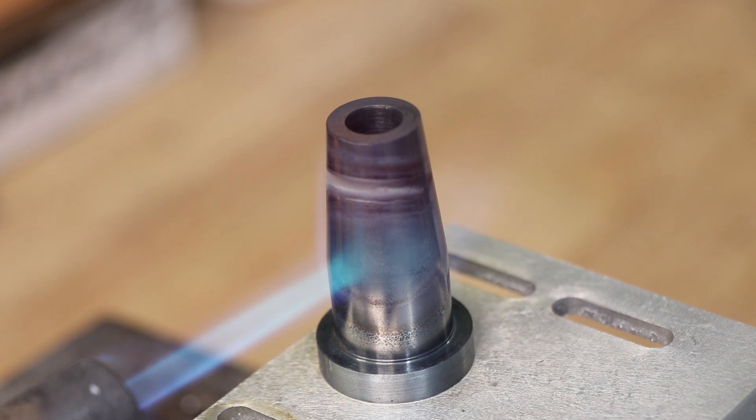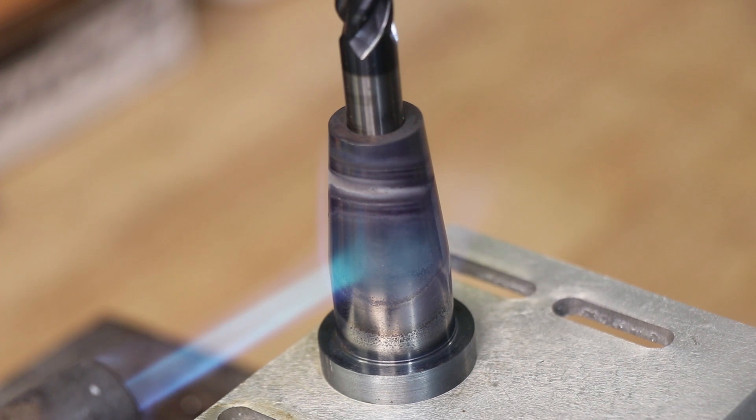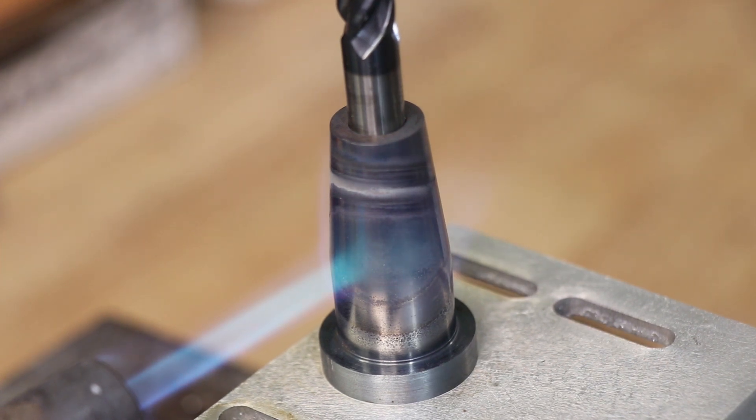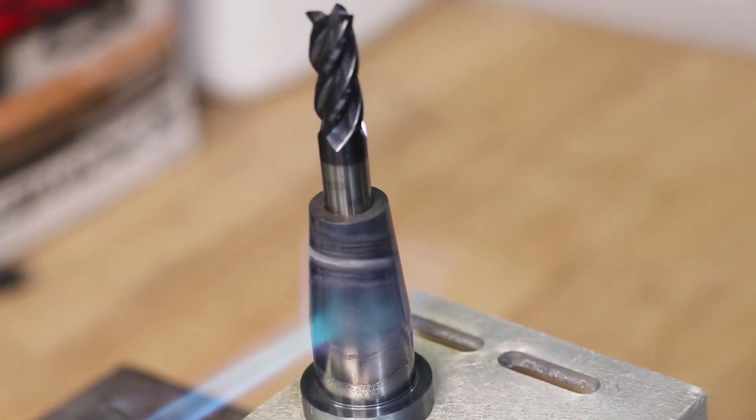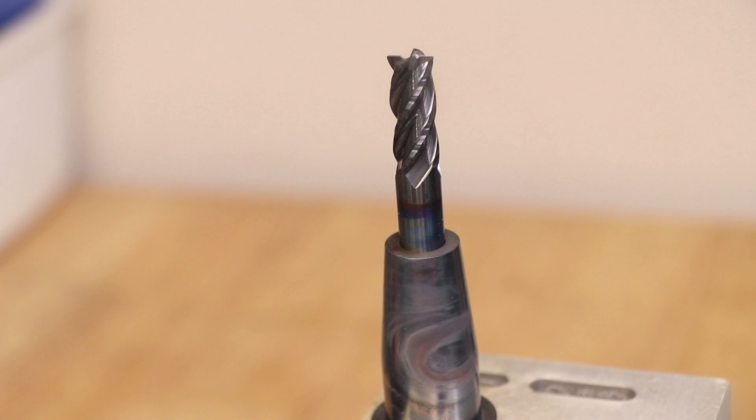And once again I heated the tool up and the end mill very easily went in about 90% of the way. There was clearly a bit of taper that I didn't remove but that shouldn't be an issue. 90% of the way should be enough. Now the tool holder is pretty hot so I'll give it about 30 minutes for it to cool down.